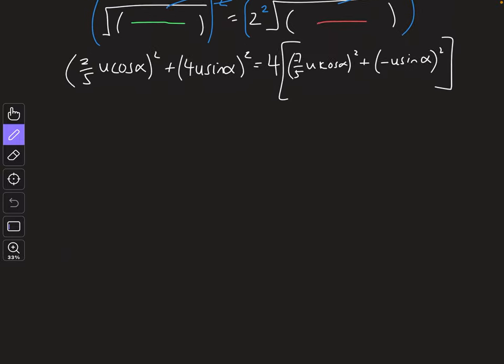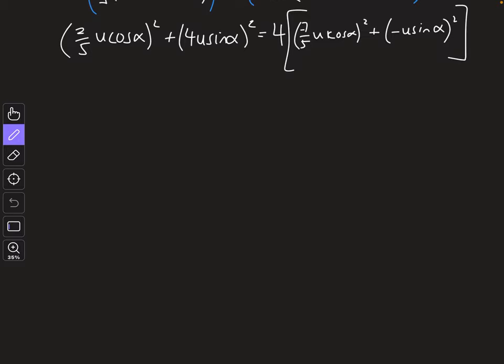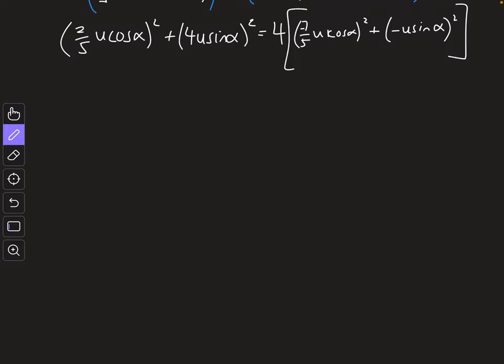Now that we've got there, we just have to solve both sides. So you probably do this yourself, but have a go yourself and then have a look through to see if you can work out what I did or if I made a mistake, which will probably happen. But if I'm squaring everything here, I get 4 over 25u squared cosine squared alpha plus 16u squared sine squared alpha equals 4 times, 7 over 5 becomes 49 over 25, square at the top and the bottom. So we get u squared cosine squared alpha.